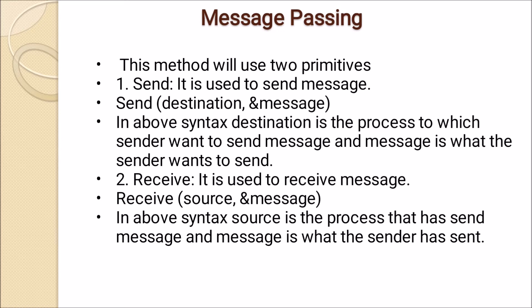One of those methods is the message passing method. There is also a classic problem called the producer-consumer problem. There are various methods to solve it — either using a semaphore variable, using a monitor, or using a signal and wait method. There are numerous methods to solve the producer-consumer problem.